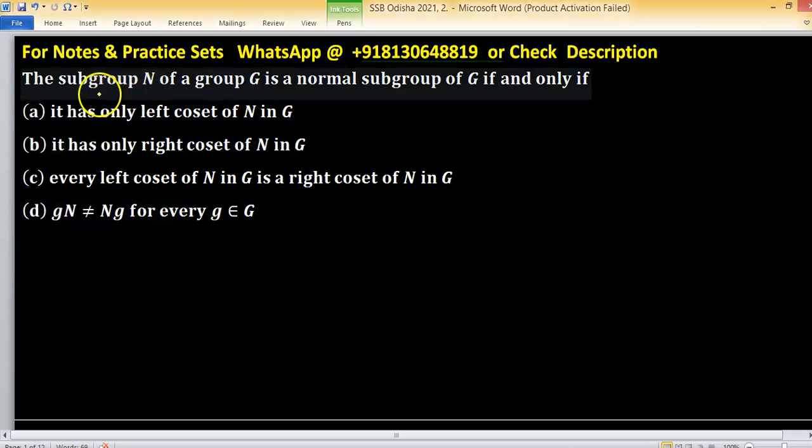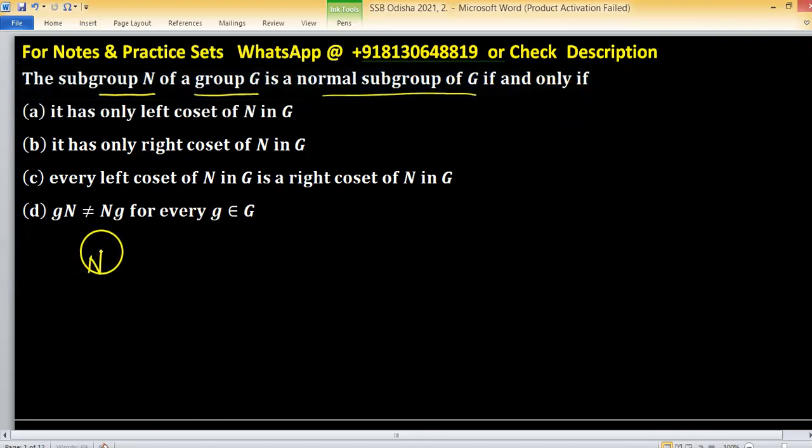In this given problem, subgroup n of group g is normal subgroup of g if and only if. This means n is said to be normal subgroup of g if and only if.